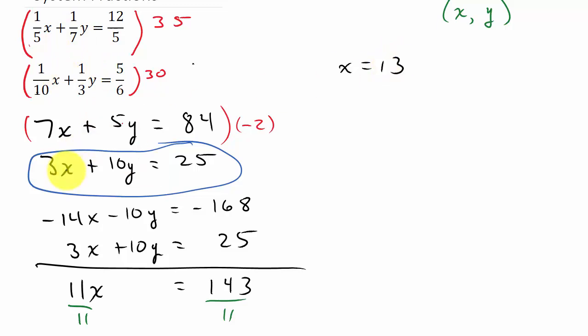I'm not going to plug it into this one. I'm going to plug it into this one. And the only reason is because the numbers are smaller and there's no fractions. Alright. So let's plug 13 in for x. So that's going to give us 3 times 13 plus 10y equals 25. And so that's what? 39 plus 10y equals 25.